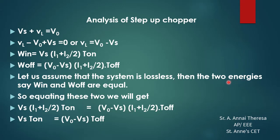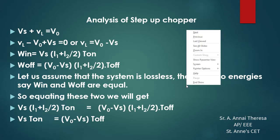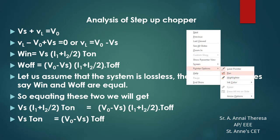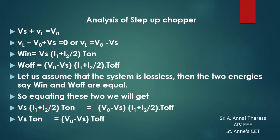Assuming the system is lossless, the charged energy equals the discharged energy: W_in = W_off. Equating the two expressions: Vs × [(i1 + i2) / 2] × t_on = (V_naught − Vs) × [(i1 + i2) / 2] × t_off. The term (i1 + i2) / 2 cancels from both sides, leaving: Vs × t_on = (V_naught − Vs) × t_off.